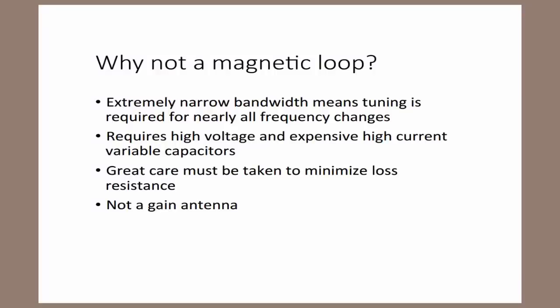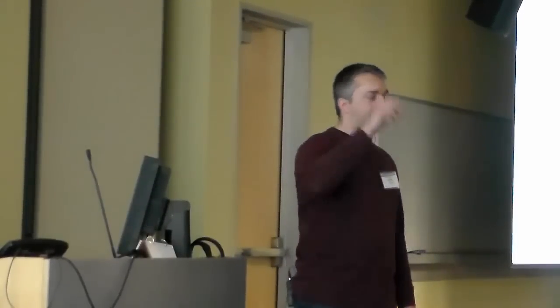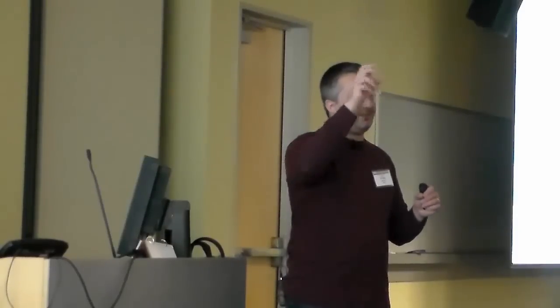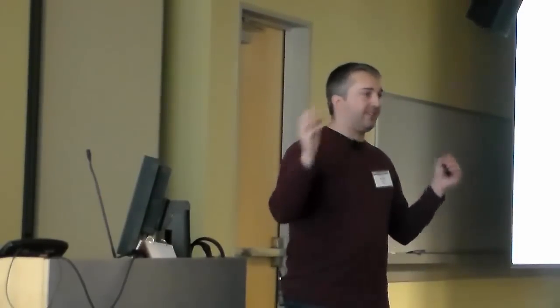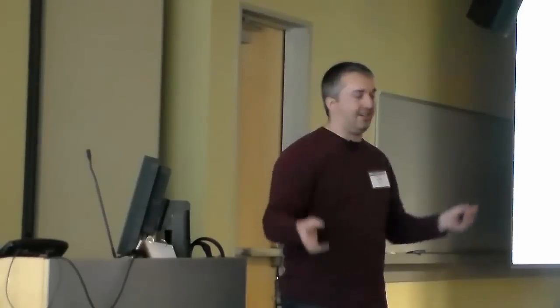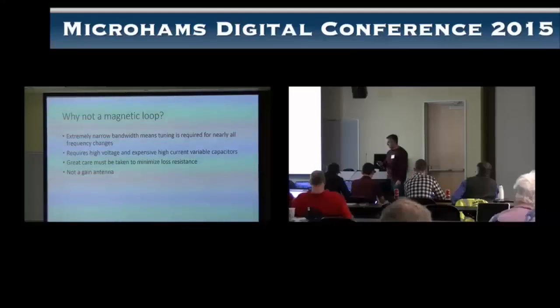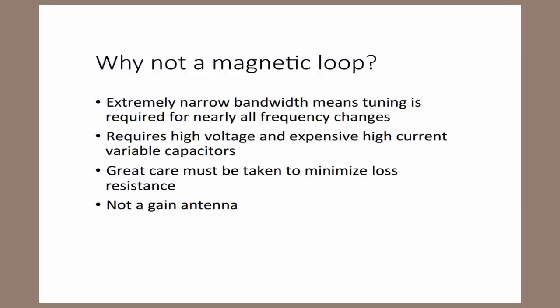Loss resistance. That's a big problem with these magnetic loop designs. And I've seen a number of them, and we'll see it on the calculator page here in a minute, that are actually hexagonal in shape. And what they've done is they've soldered together pipe joints instead of actually bending the copper. Every one of those joints is a potential resistance point. And even 0.1 ohm of resistance will significantly impact how effective these antennas are. So you've got to be very careful. And then finally, it's not really a gain antenna. It does have a bit of a lobe pattern, but I wouldn't classify this as a gain antenna.